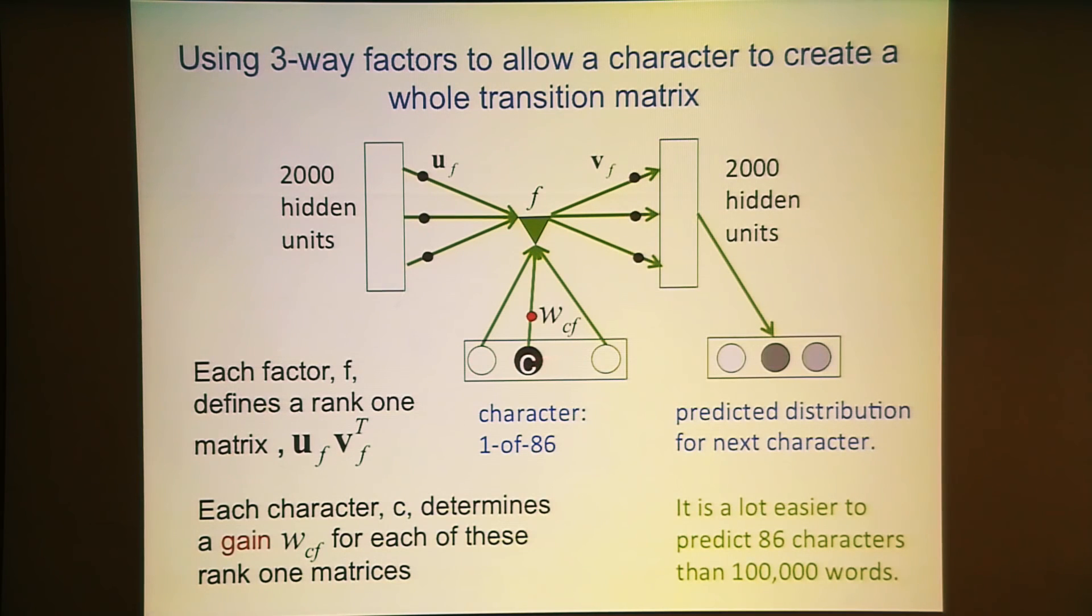It sees a character. It uses its factors to get inputs for the next mental state. It's going to make a prediction via a softmax about what the next character will be. And now you're going to train it to maximize the log probability of getting the right answer.